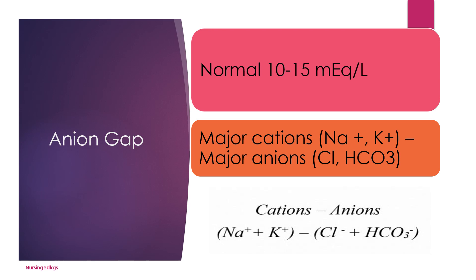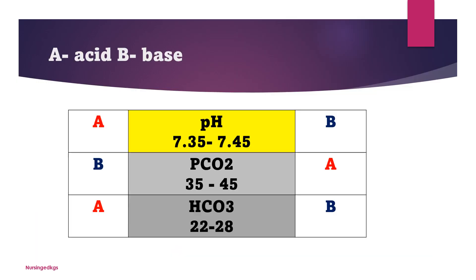A high anion gap — above 15 — indicates an increase in unmeasured anions and may point to conditions like diabetic ketoacidosis, lactic acidosis, or renal failure. A low anion gap — less than 10 — may indicate conditions like hypoalbuminemia or multiple myeloma, where there is a decrease in unmeasured anions. Identifying the cause of metabolic acidosis through the anion gap is very important for targeted and effective treatment, leading to better patient outcomes. It's a very important tool when managing acid-base disorders.